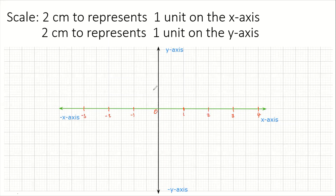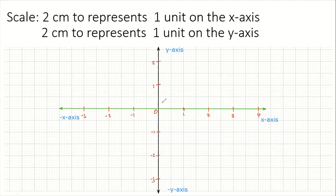On the y-axis it's the same scale — measure every 10 small boxes and put a stroke to represent two centimeters. Mark strokes going up and down. Then put on the unit numbers: one, two going up, and negative one, negative two, negative three going down. That is your Cartesian coordinate system with a scale of two centimeters to represent one unit on both axes.